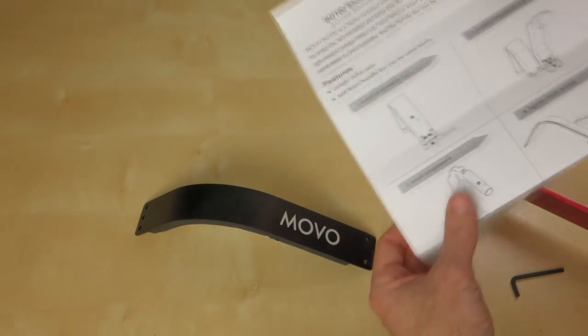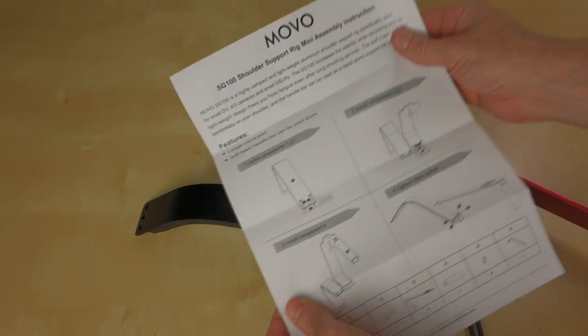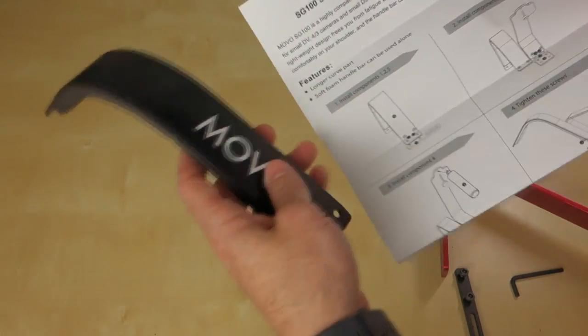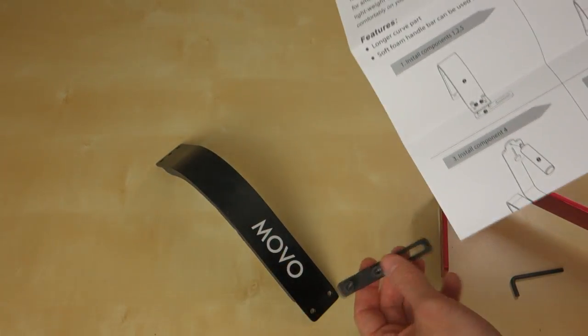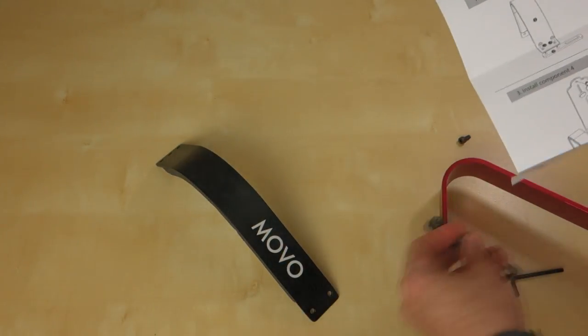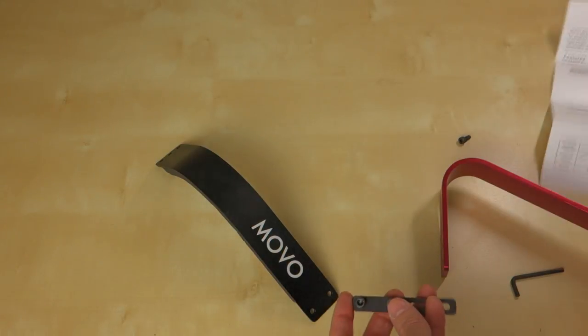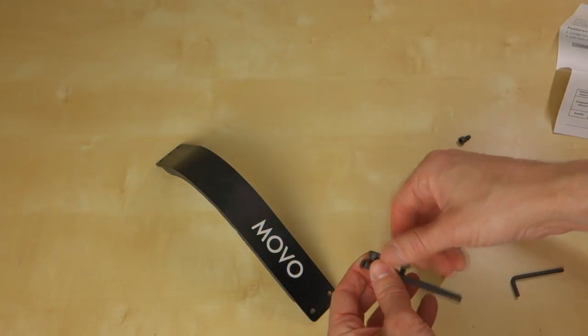And of course, after stumbling and fumbling for a few minutes here, I did look at the actual assembly instructions. It shows you're actually taking the black piece and putting it onto the little black bar, not putting the black bar onto... Yeah, I was confused previously. So we'll go ahead and do that correctly now.